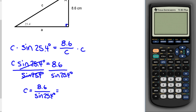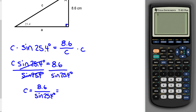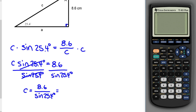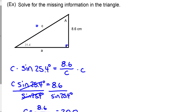Make sure you're in degree mode. Type in 8.6 divided by the sine of 25.4. When you hit enter, you get an answer of 20.0. I'm using 20.0 because the first side length given was accurate to the first decimal place, so I'm matching that. This length C is 20.0 centimeters.